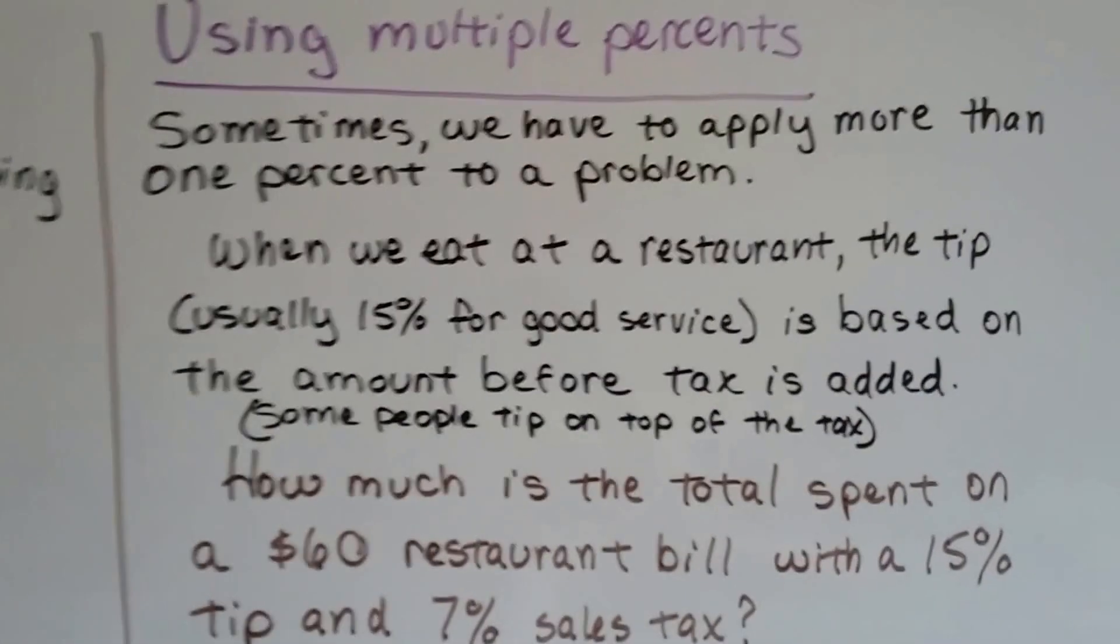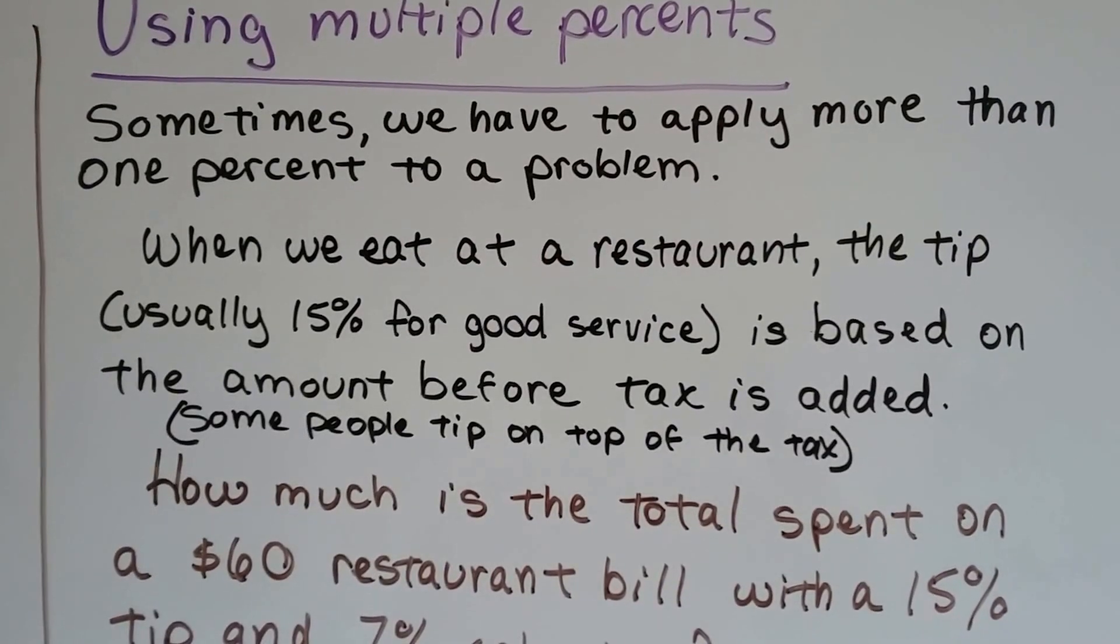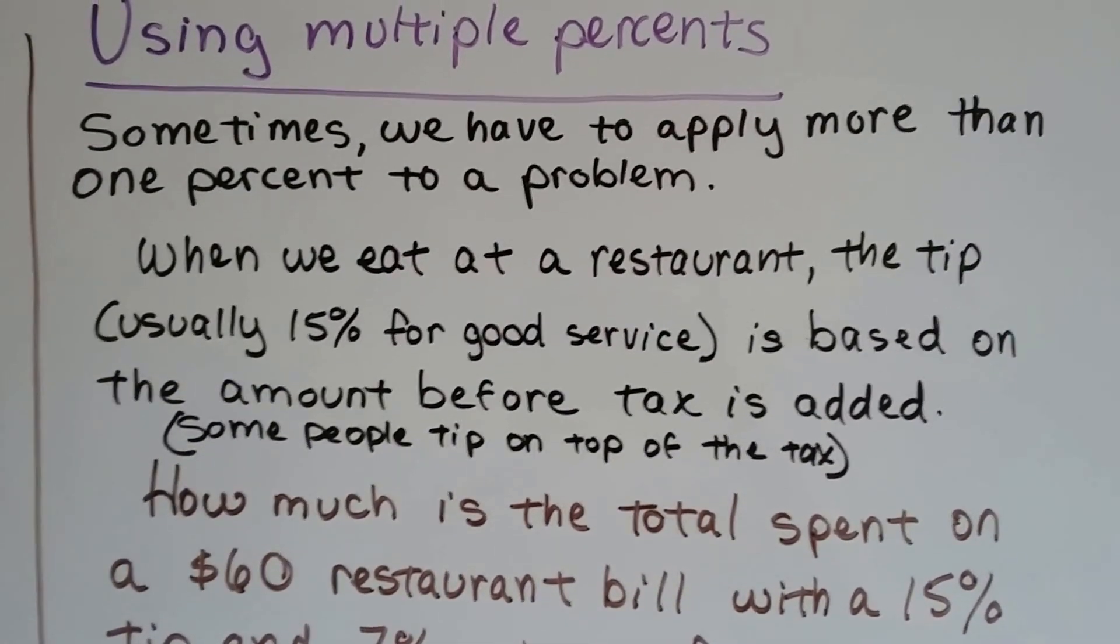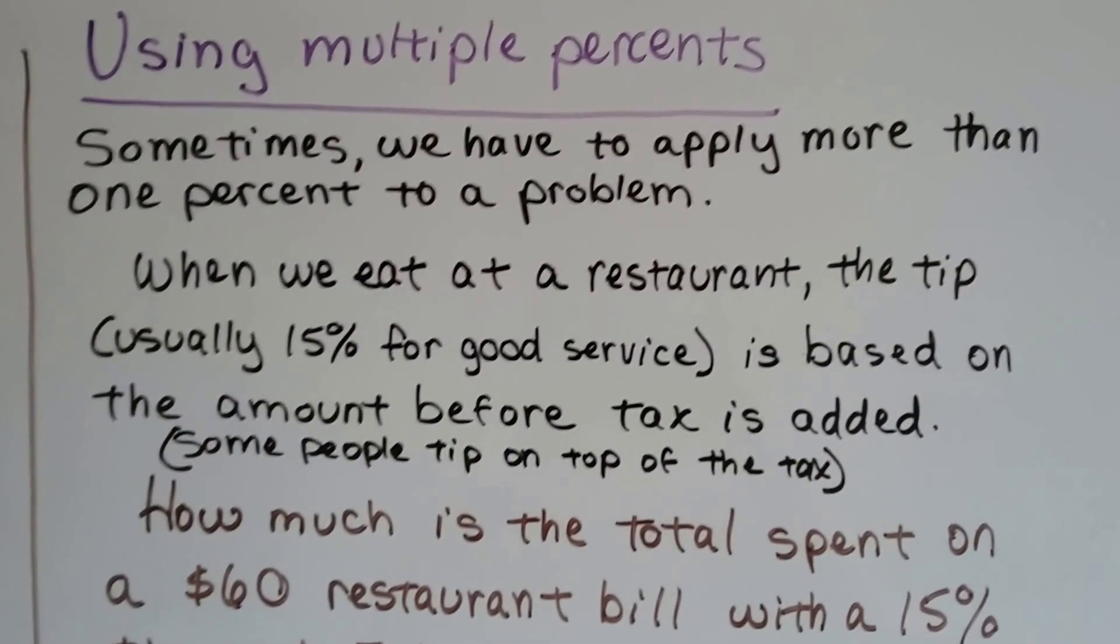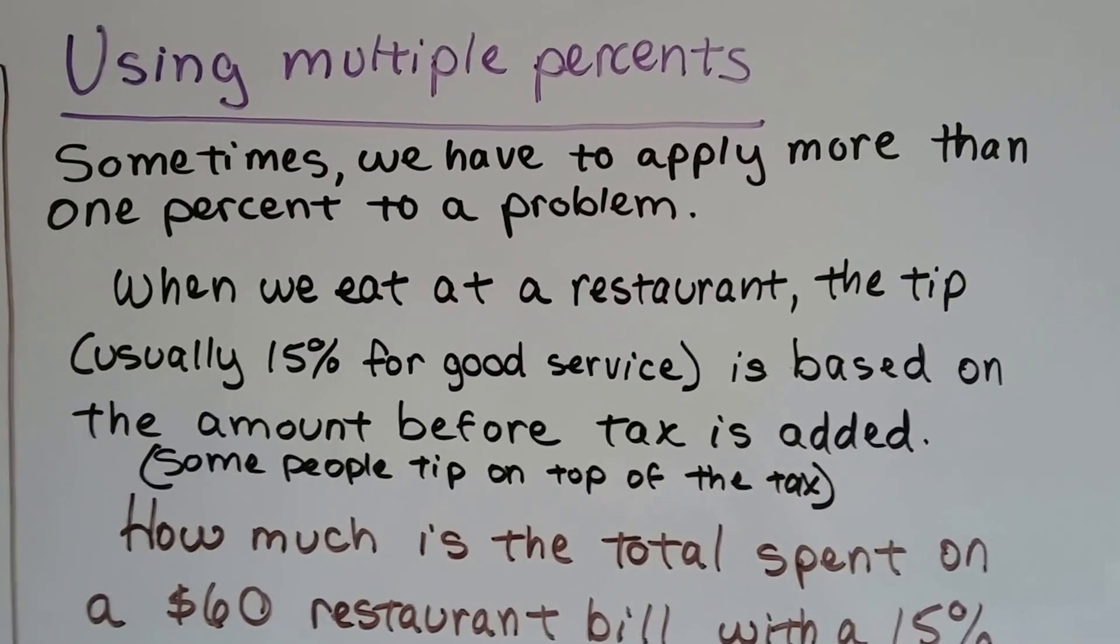Sometimes we use multiple percents. Sometimes we have to apply more than one percent to a problem. When we eat at a restaurant, the tip, usually 15% for good service, is based on the amount before tax is added. Well, some people tip on the amount with the tax added.